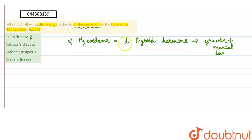Moving on to the next one, B is Addison's disease. Addison's disease is caused by the deficiency of cortisol - it is caused by the less amount of cortisol